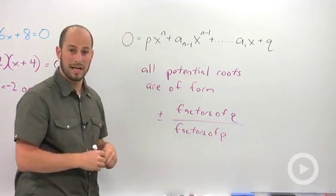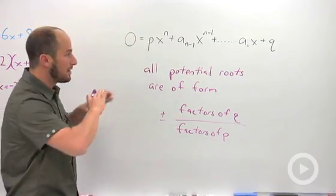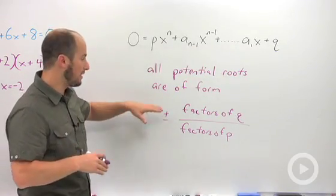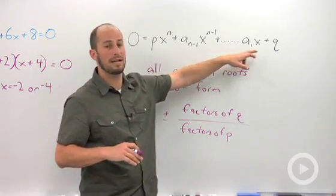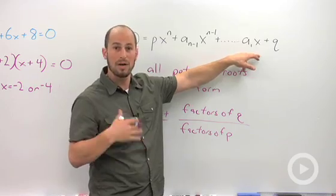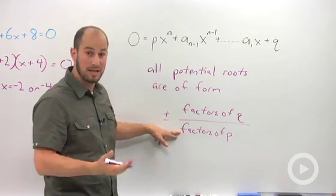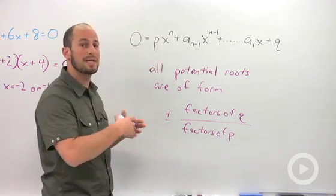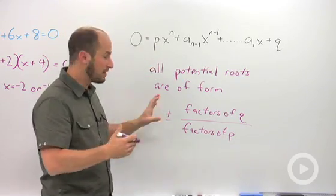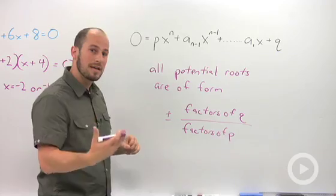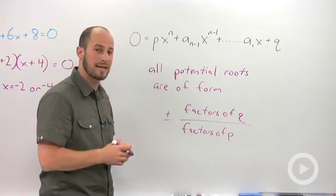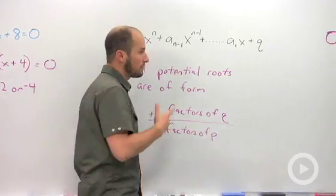It can be either positive or negative. So when we're looking at that, the middle terms don't matter at all. Really, all we're concerned with are the factors of q, which is our last term, the constant term, over the factors of p, our first coefficient. And then we can either have positive or negative any of those combinations. So that's the theorem in letters. Let's take a look at it in numbers.